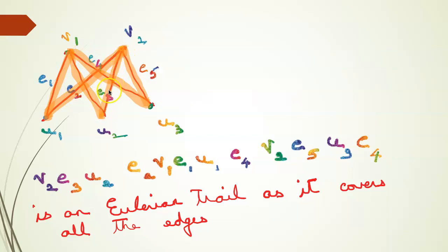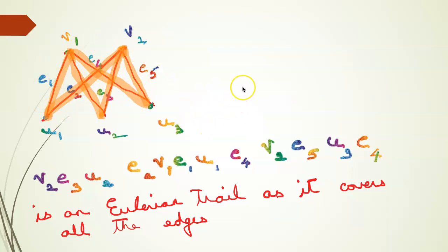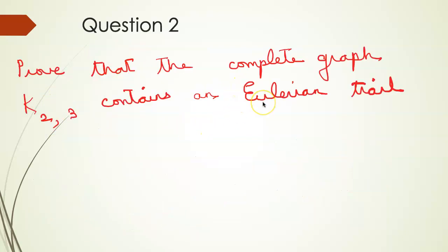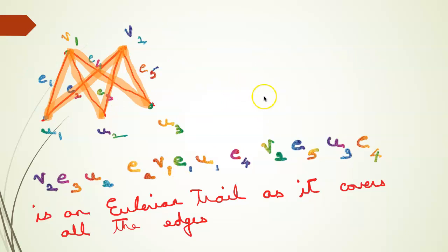Starting with E3, the trail goes: E3, E2, E3, E2, E1, E4, E5. This trail covers all the edges, so this is an Eulerian trail, and that is what we are asked to find — to show that K23 contains an Eulerian trail.